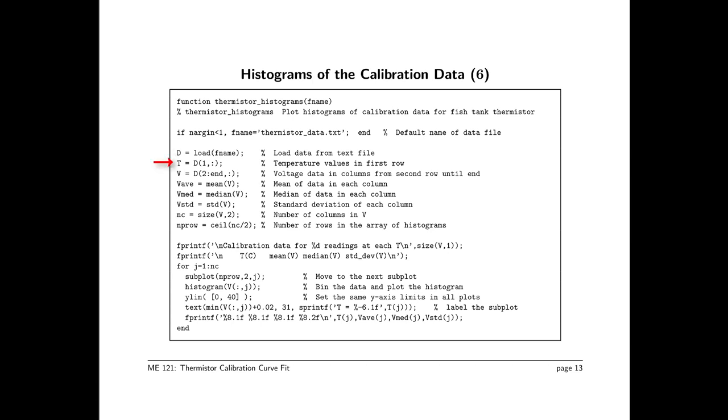The first block of statements here have to do with loading the data and copying them into some working arrays. As before, we copy the first row into the temperature vector. The V equals D statement copies all the columns below the first row. Vav stores the average value of each column in V. Vmed stores the median value. Vstd stores the standard deviation. We're going to print these for each of the columns as a way to summarize the data set. And as before, we've got NC as the number of columns. NProw is this variable we use to arrange the subplots. So this first block of statements simply prepare us for doing the data reduction.